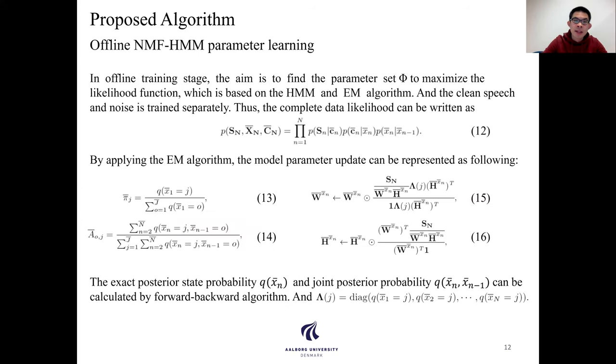In the offline training stage, the aim is to find the parameter set to maximize the likelihood function, which is based on the EM-HMM and EM algorithm. The complete data likelihood can be written as equation 12.